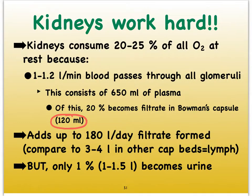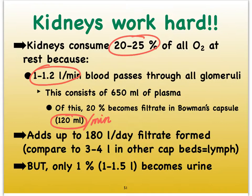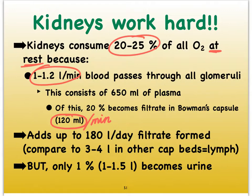So in one minute, about 120 mils of filtrate is produced. We pass through about a liter per minute through those glomeruli, and your kidneys consume about a fifth to a quarter of all the oxygen — and that is at rest. Per day, we can crank out 180 liters of filtrate, which is about 45 gallons. If you look at what other capillary beds do when forming their filtrate — which we call lymph — they only crank out about three to four liters. Again, 180 liters versus three or four liters. Your kidneys are amazingly efficient and effective at what they do.